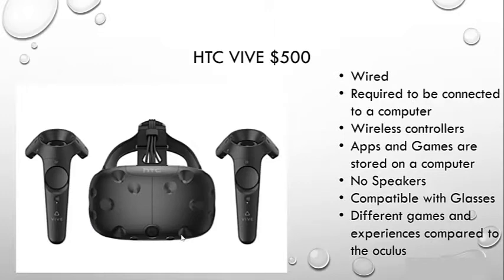Next we're going to go over the HTC Vive — the newer version. This one is wired and has to be connected to a computer. The controls are wireless and the apps and games are stored within the computer, not the headset. It does not come with speakers but is compatible with glasses. Sometimes different experiences or games are available on HTC Vive versus the Oculus headset, so if you're interested in getting either one, do a little research.